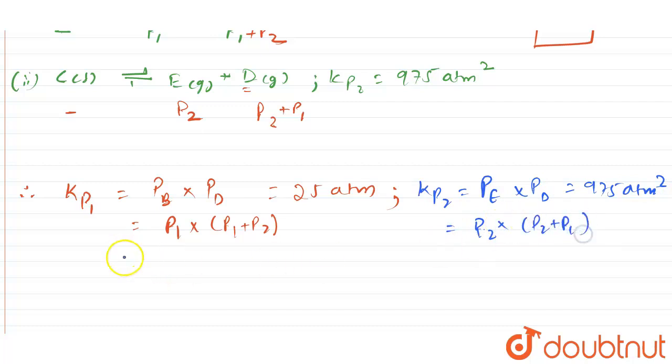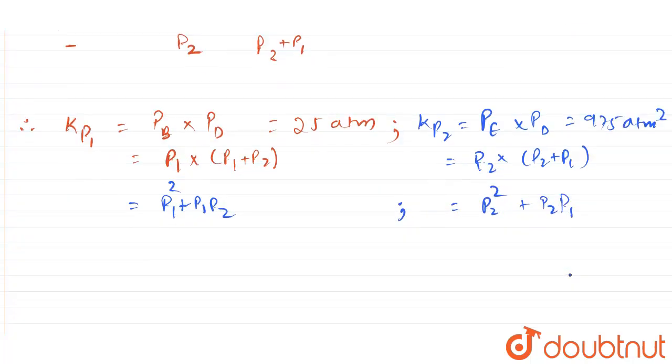Multiply P1 with the bracket, so you are going to get P1 square plus P1 P2. And here you are going to get P2 square plus P2 P1.